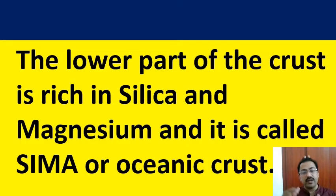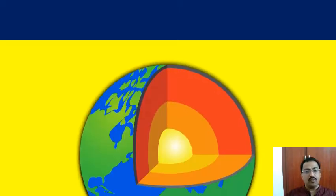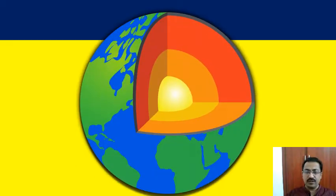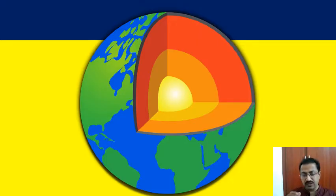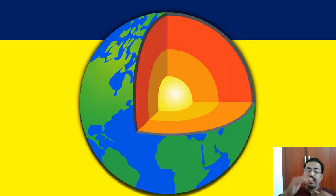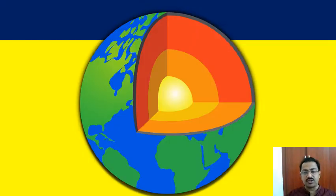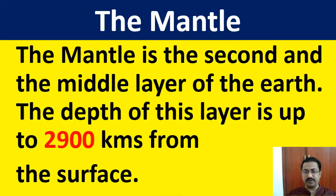Sima is found in the oceanic crust. Now let us see the picture. Dear students, in this picture you can understand how the interiors of the earth are found. The interior of the earth is the core; above that you have the mantle, and above the mantle you have the crust. Sima is found here.